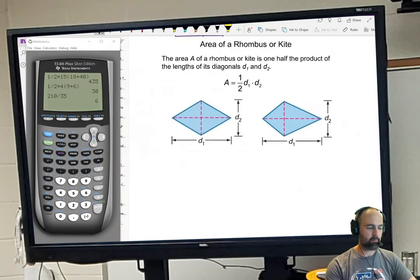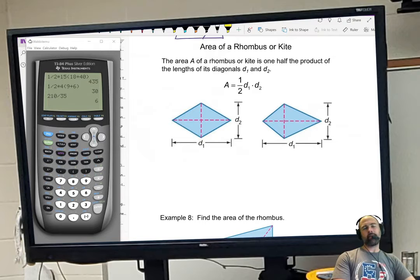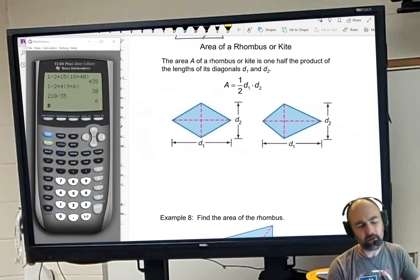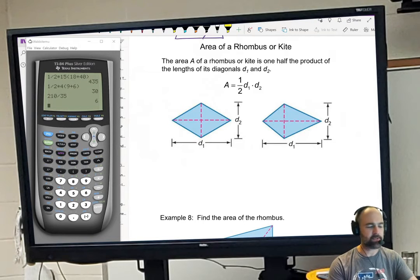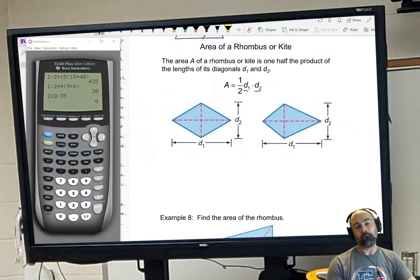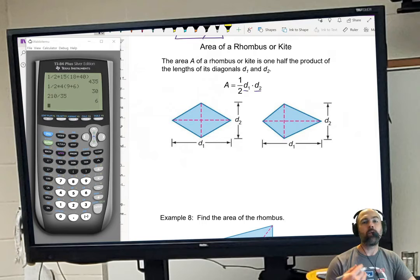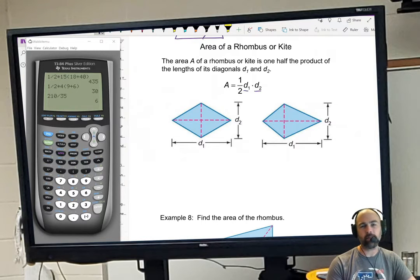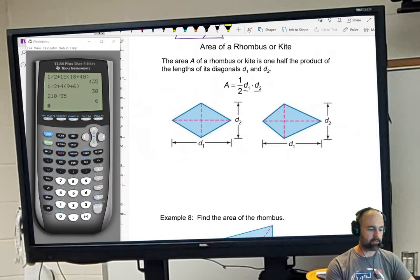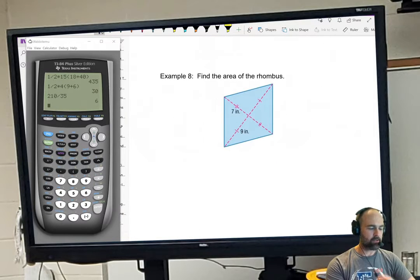All right, moving on. Rhombuses or kites. These are going to have the exact same area formula even though they're slightly different shapes. Now, the area formula is diagonal 1 times diagonal 2 divided by 2: one half d1 d2. Now, keep in mind that a rhombus is also a parallelogram. We saw that earlier on example 2, I believe. So you could use either formula for it. So you can use base times height or you can use one half d1 d2. Kites, our only formula is one half diagonal 1 times diagonal 2.